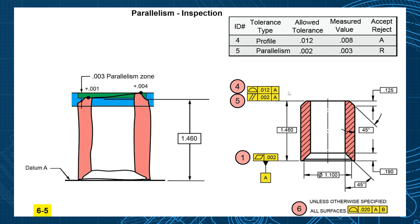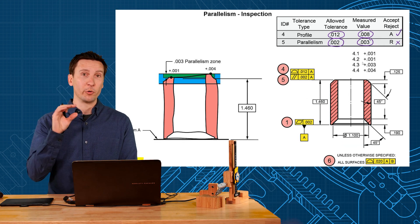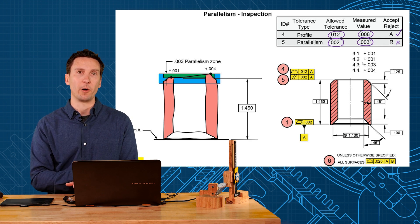So when we set up our inspection report, you'd have our profile tolerance, allowed tolerance of 12, took up 8. So that's a pass. But our parallelism was allowed 2, took 3, and that would be a reject. This is a consolidated form. And if you want to include those raw data points—4, 1, 4, 2, 4, 3, 4, 4—definitely include those in the report as well.